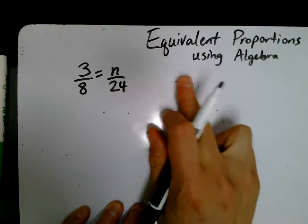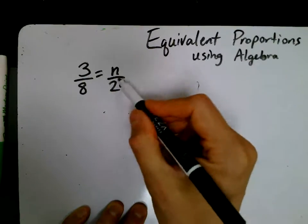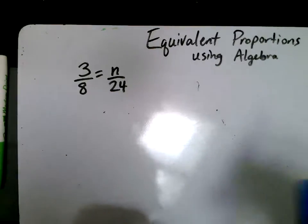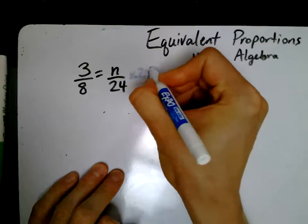So we need to undo this division by 24, and the opposite of dividing by 24 is multiplying by 24.